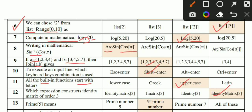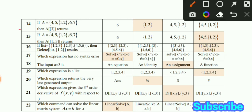MCQ number 13: Option D is correct. MCQ number 14: If A equals {{4,5},{1,2},{6,7}}, then A[[{3}]] returns the curly bracket of {6,7}. The result is {6,7} and this is the correct option.